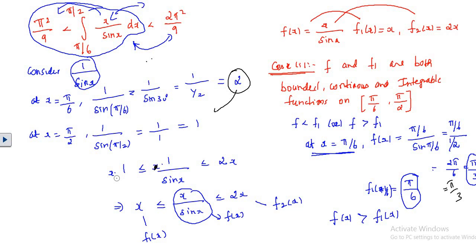So 1/sin(x) lies between 1 and 2. Now to find the range for x/sin(x), I multiply x through all terms: x·1 = x, x·(1/sin x) = x/sin(x), and x·2 = 2x. So we have proved that x/sin(x) lies between x and 2x. We need to show the area when integrating from π/6 to π/2 varies between π²/9 and 2π²/9.